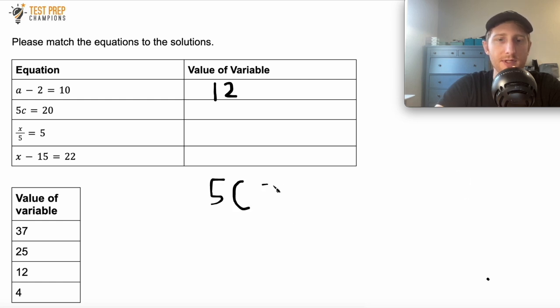So now let's do 5c equals 20. So the name of the game here is to get the c by itself. So 5c is the same as 5 times c. So what's the opposite of multiplication? Well, the opposite of multiplication is division. So if I divide by 5, the fives are going to cancel out. And that's going to leave me with just the c on the left hand side of the equation. But remember, whatever I do to one side, I also have to do to the other side. So I have to do 20 divided by 5. And when I rewrite this, I'll see that c equals 4.